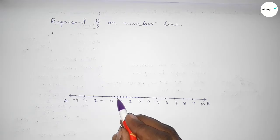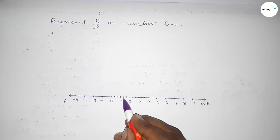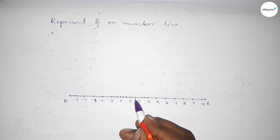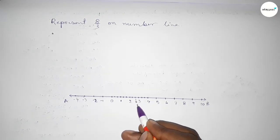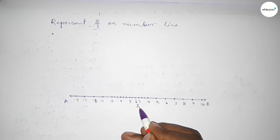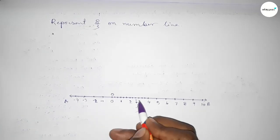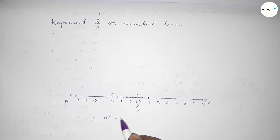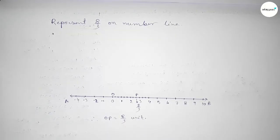So this is 1 over 3, 2 over 3, 3 over 3, 4 over 3, 5 over 3, 6 over 3, 7 over 3, 8 over 3. This is 8 over 3 on the number line. Taking O and P, therefore OP equals 8 over 3 units. That's all — thanks for watching, please share it with your friends.